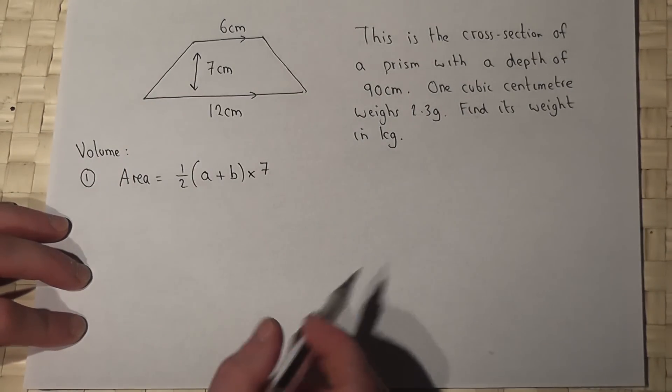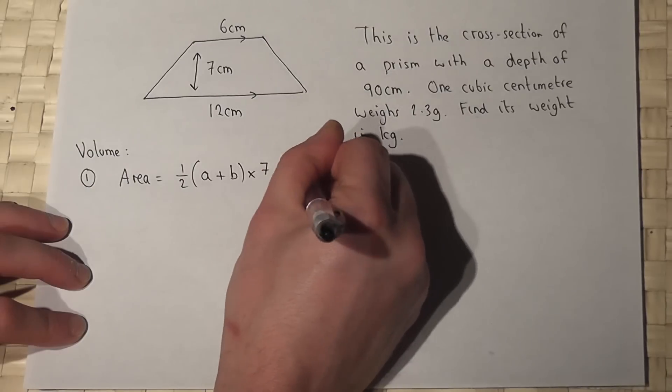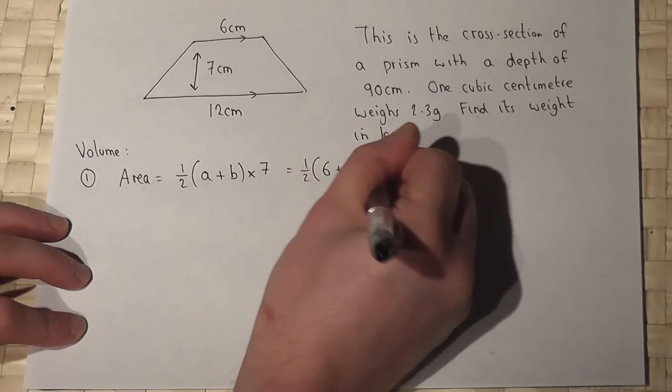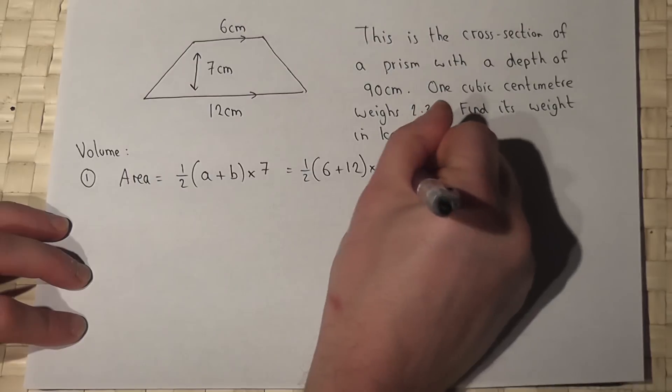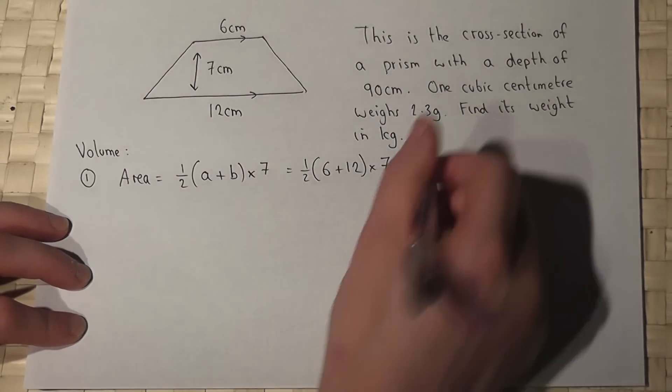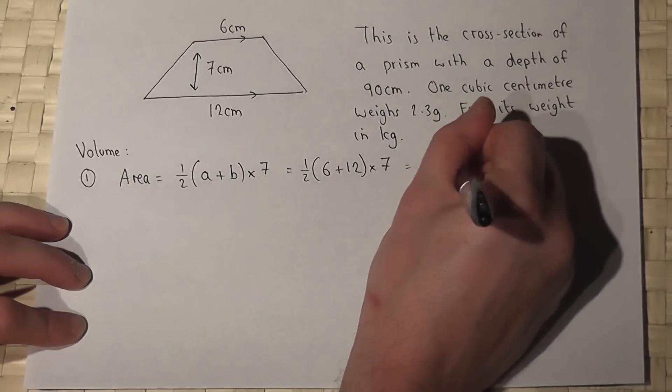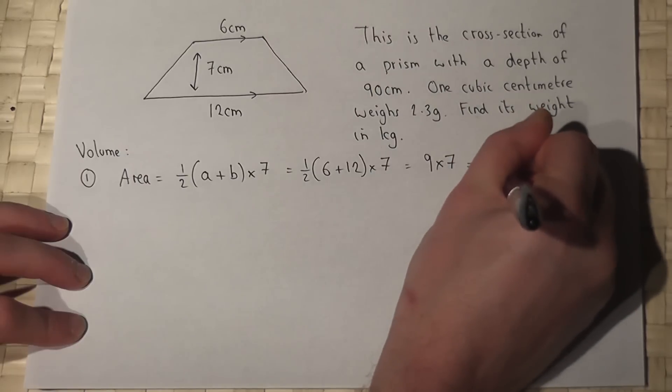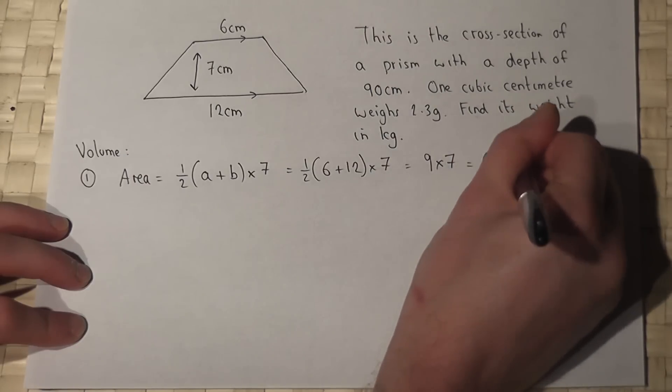Which is seven, so a half six plus 12 times seven. Six plus 12 is 18, a half of 18 is nine, so it's nine times seven which is 63 centimeters squared.